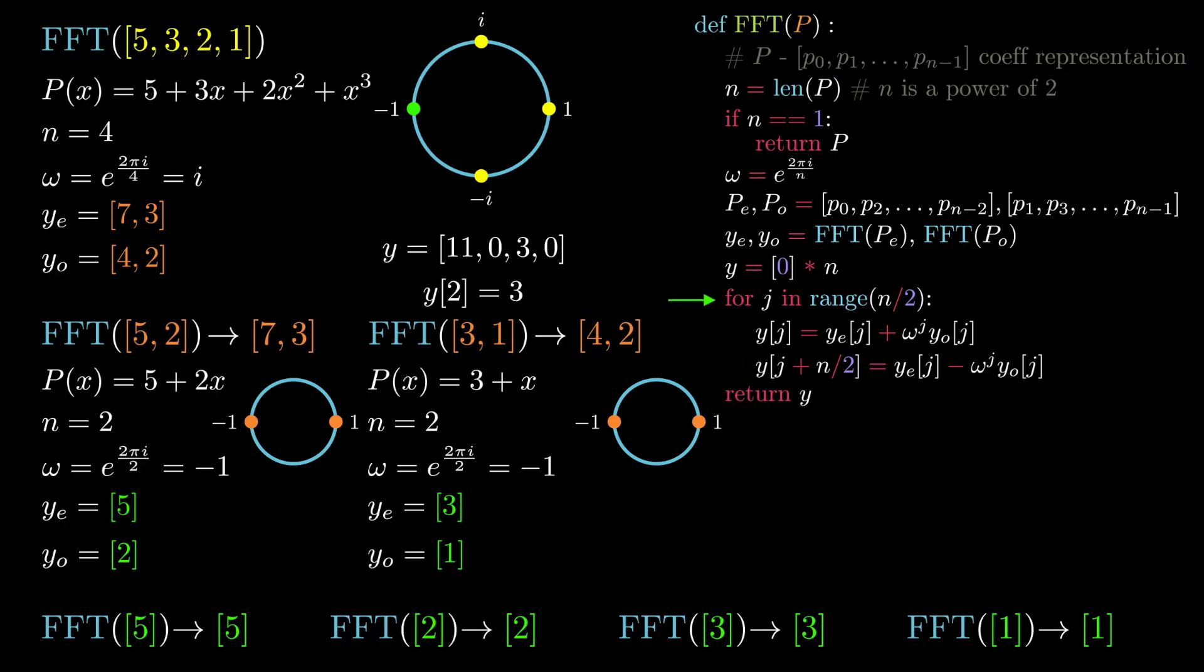Now we go to the second iteration of the for loop, which starts by assigning the first index of y to be the first index of ye plus omega to the power of 1 times index 1 of yo. This corresponds to evaluating the second root of unity in our unit circle, which is just omega to the power of 1. The value of this expression is the complex number 3 + 2i, which now is the index 1 of our output list.